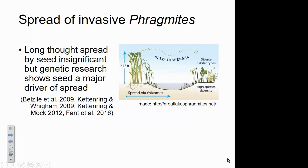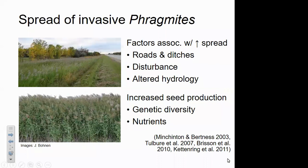For a long time, spread by seed was thought to be insignificant, but over the past 10 years genetic research has shown that seed is in fact a major driver of spread, and many new populations are arising through seed dispersal. Factors associated with spread include disturbances such as roads, ditches, increased nutrients, and altered hydrology. This is a very opportunistic lineage that thrives under disturbed conditions, and greater genetic diversity is associated with production of more viable seed, particularly when nitrogen availability is higher.